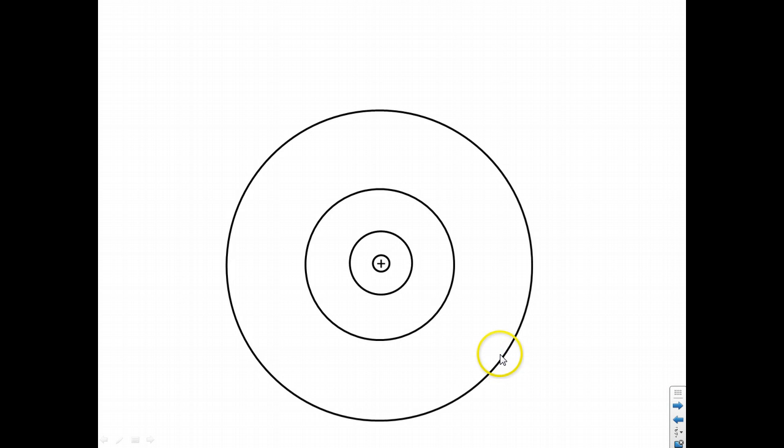So this is a continuation of our notes from IB Physics SL Topic 7. We were last looking at the atom, and what we see here is Bohr's model of the atom with discrete energy levels.